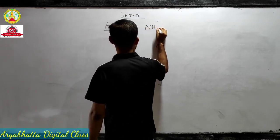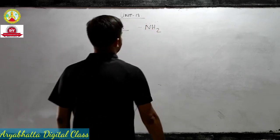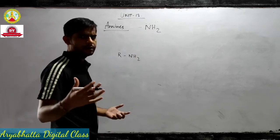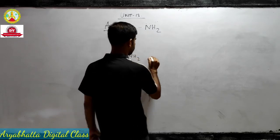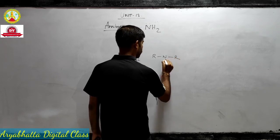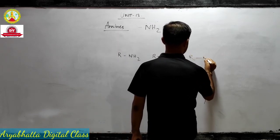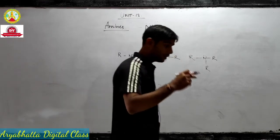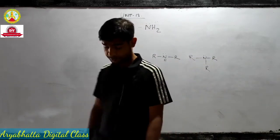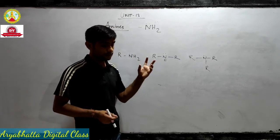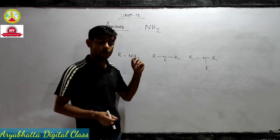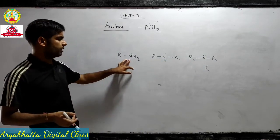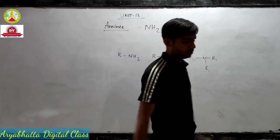Amines have the functional group NH2. There are classifications in amines: 1st degree, 2nd degree, and 3rd degree amines. If nitrogen has one alkyl group it is 1st degree; if nitrogen has two alkyl groups it is 2nd degree. The degree of amines is not counted by the number of carbons surrounding the carbon to which the functional group is attached. Instead, in amines we consider the nitrogen atom and count the alkyl groups surrounding that nitrogen atom to determine the degree.